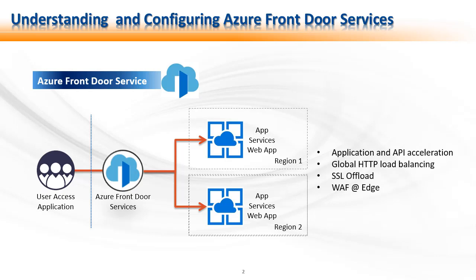AFD uses Anycast. What is Anycast? It is a network addressing and routing methodology that tries to reach the destination using the fewest hops amongst the other routes available. There can be multiple routes, but amongst the many routes available, AFD chooses the shortest and the fewest hops. AFD also uses Split TCP, which breaks connections into smaller pieces, thus reducing latency and providing better performance.